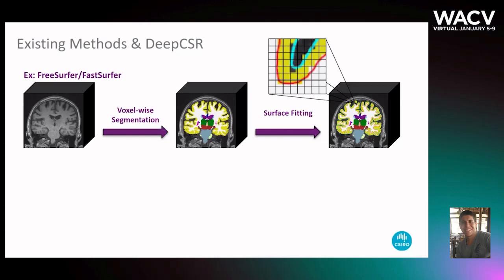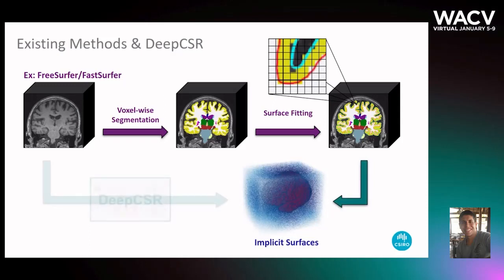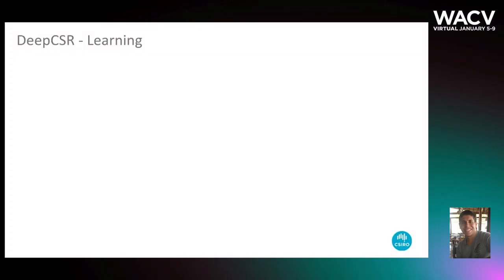To overcome this problem, we propose DeepCSR, a 3D deep learning model that learns to predict implicit surface representations for cortical surfaces directly from the MRI. Have a look at how it works.